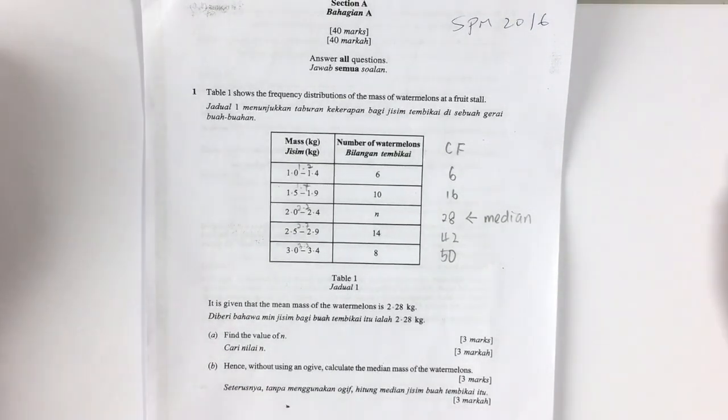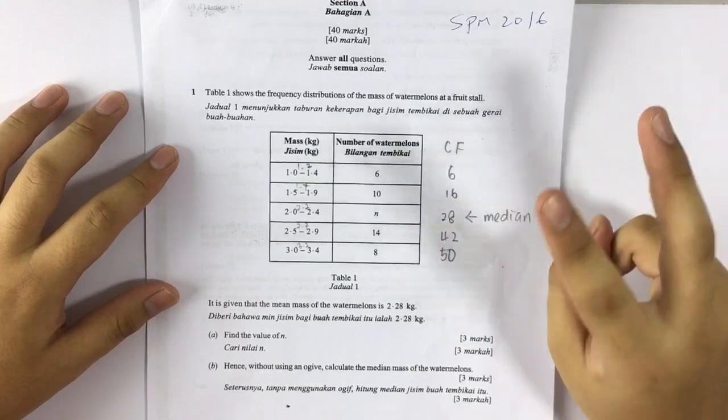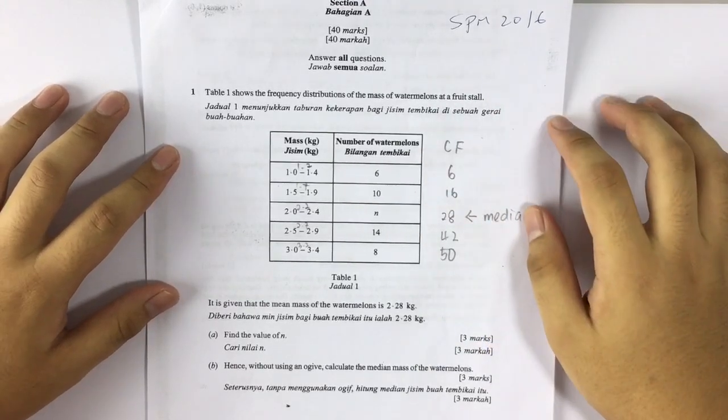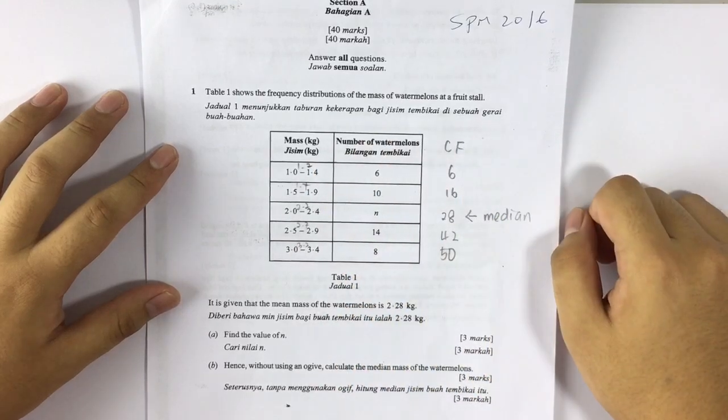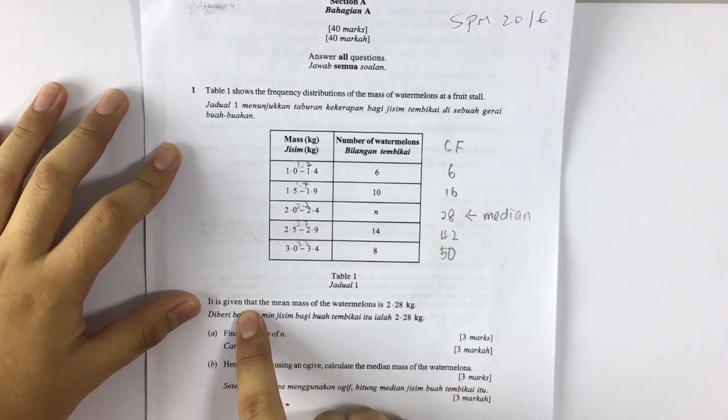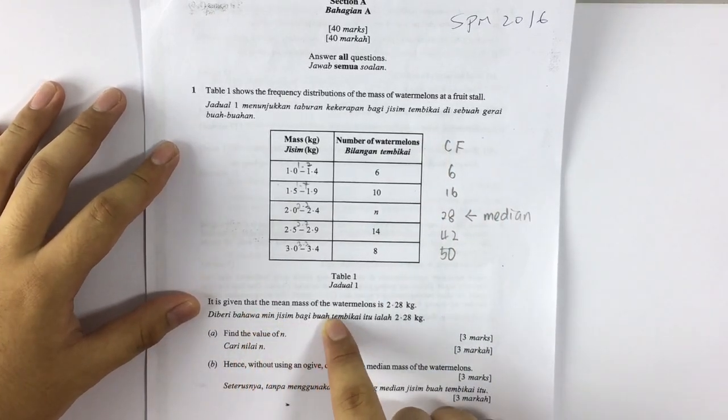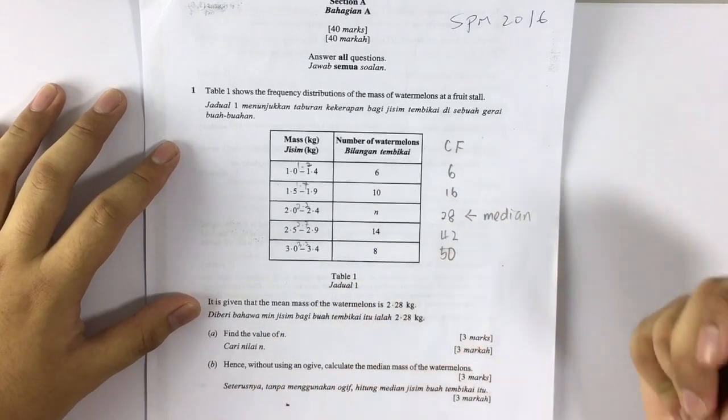Hi guys, today we are going to talk about SPM 2016, Edmets Paper 2, Section 8. In these questions, you are given frequency distributions and the mass of watermelon at a fruit store.